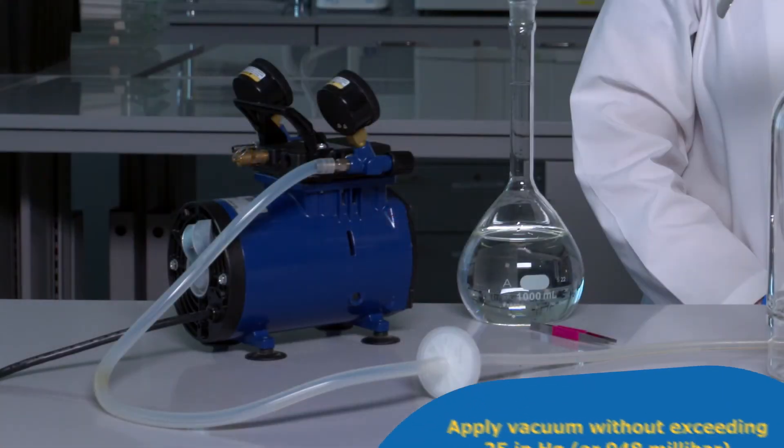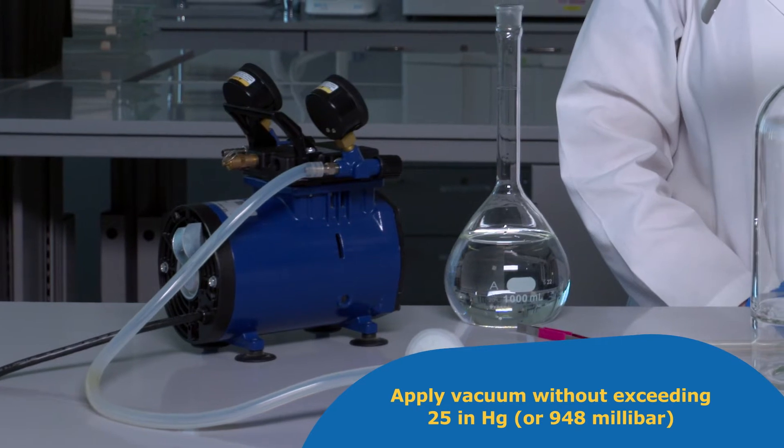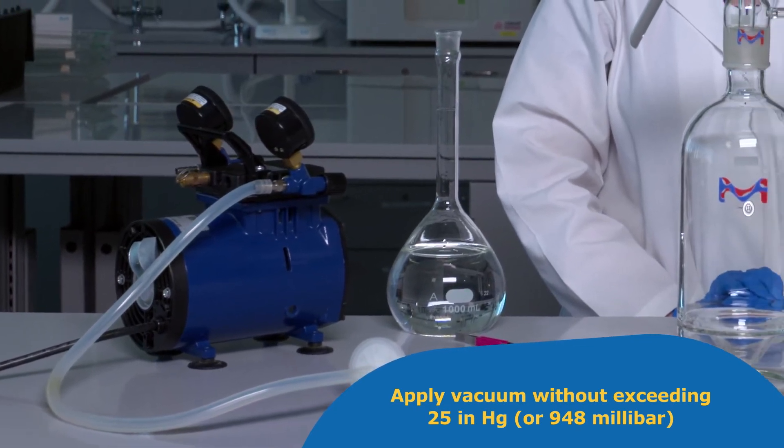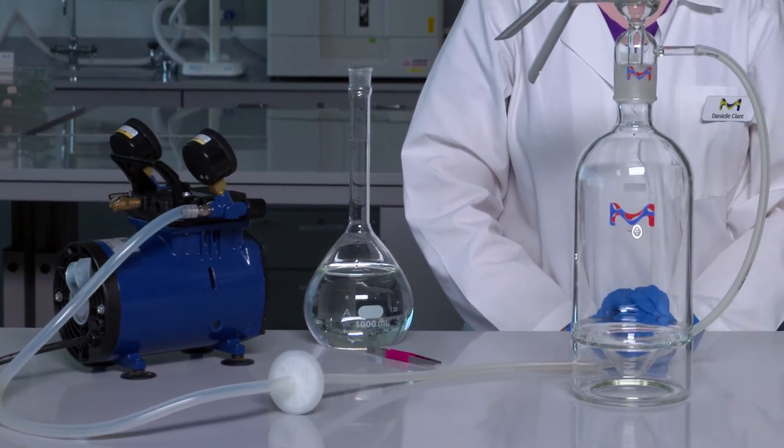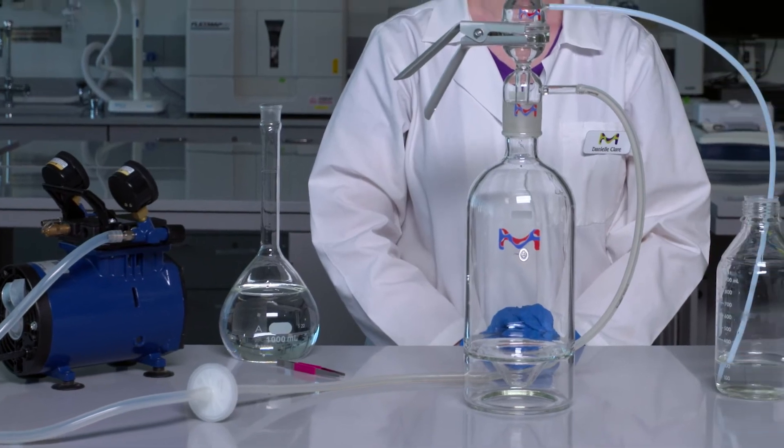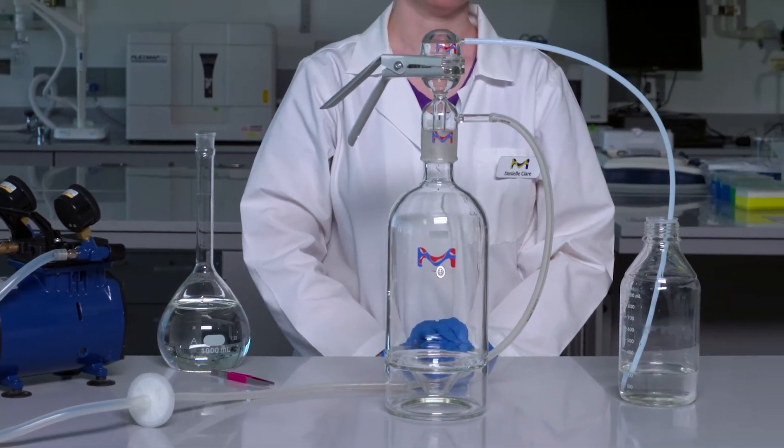For both continuous and batch filtration, apply vacuum without exceeding 25 inches of mercury or 948 millibars. Once your solution has filtered, turn off the vacuum and disassemble the filtration cap.